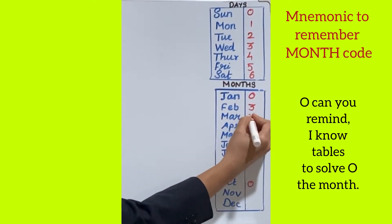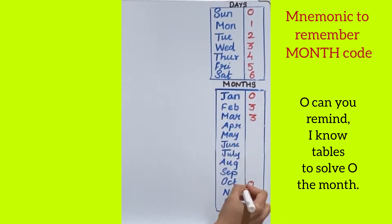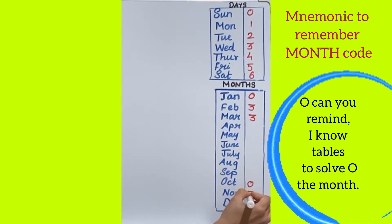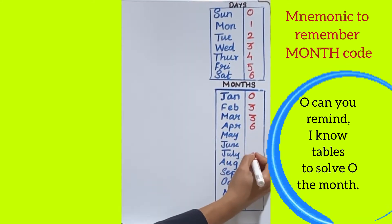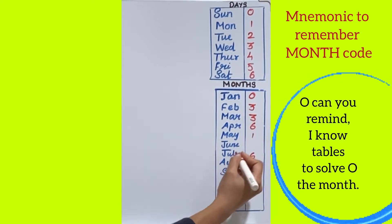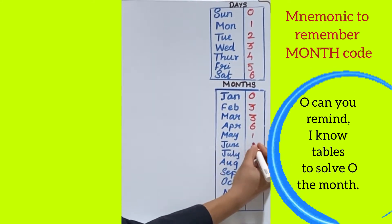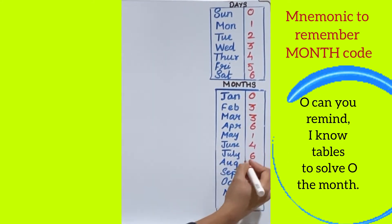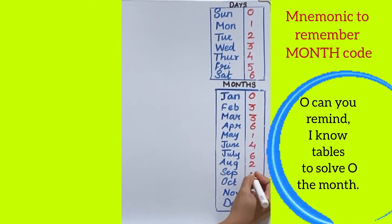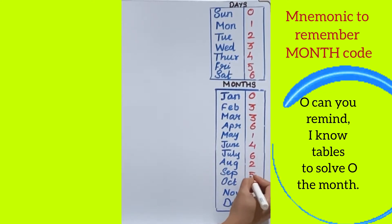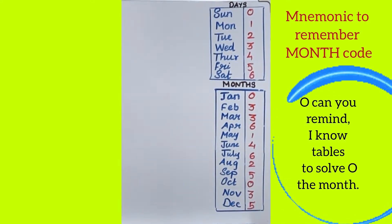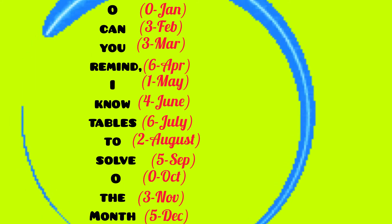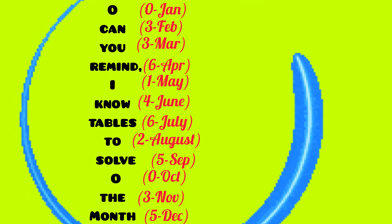The value for each month: January is 0, October is 0, May is 1, August is 2, March is 3, November is 3, April is 6, July is 6, June is 4, September is 5, December is 5. Use a mnemonic to remember the code of each month.